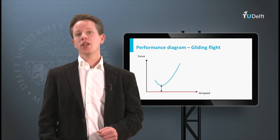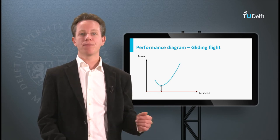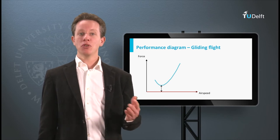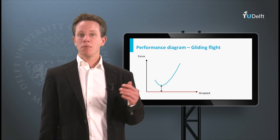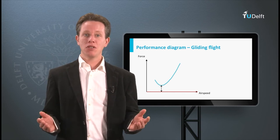So what does this mean? If we have zero thrust, the aircraft will be performing a gliding flight. It is descending. The flight path angle is defined as being positive when climbing. So the maximum climb angle in gliding is in fact the minimum descent angle.